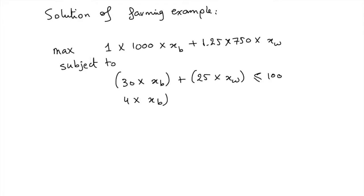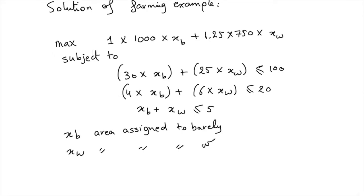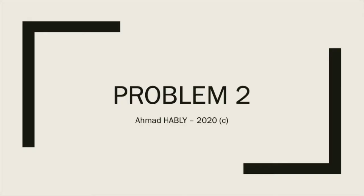And the second constraint less than 20, and XB plus XW less than 5. XB is the area assigned to barley and XW is the area assigned to wheat. So this is the solution for the farming problem.